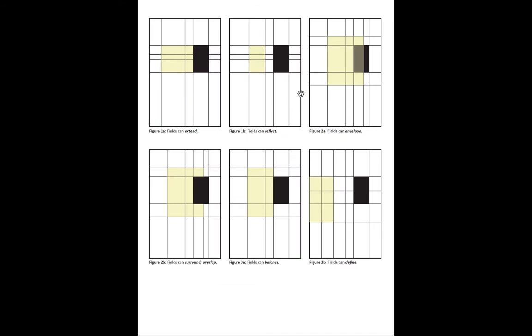The fields that you've now added to your figures can do many things. First, they can extend. Second, they can reflect. Third, they can envelop. Fourth, they can surround or overlap. They can balance and they can also define. You should start to think about what your fields are doing to your figures and what the relationship between the two is.